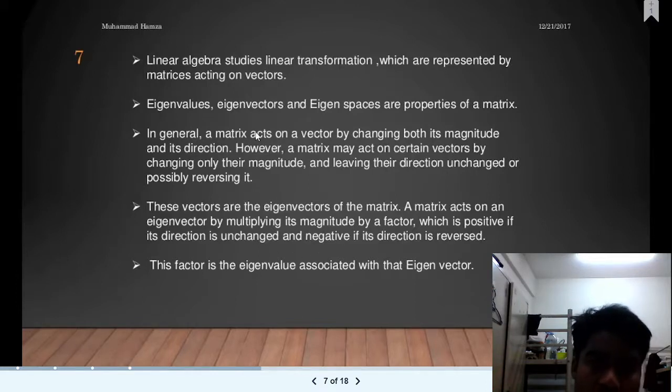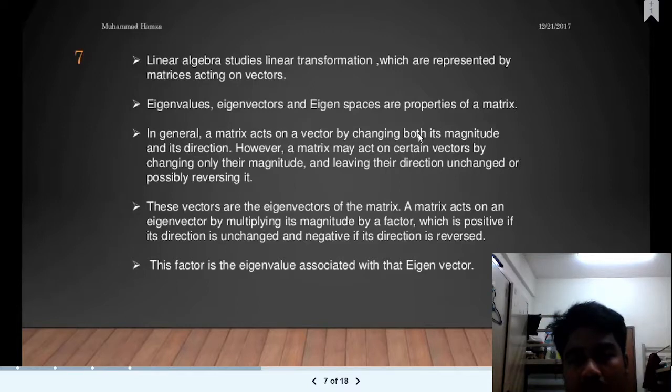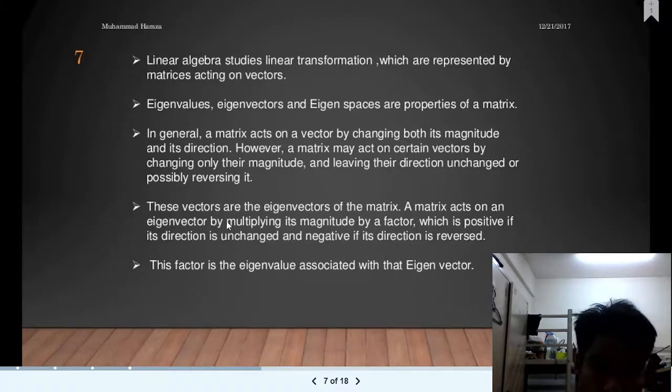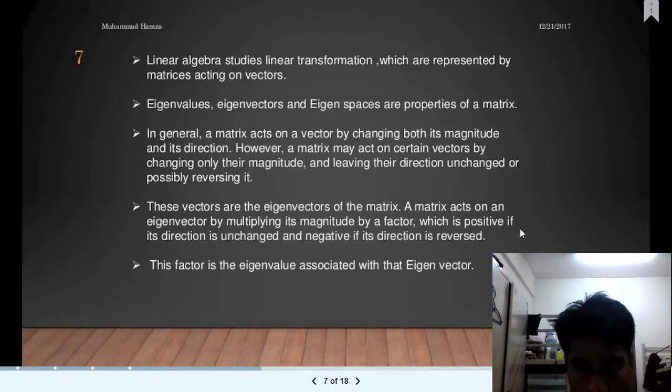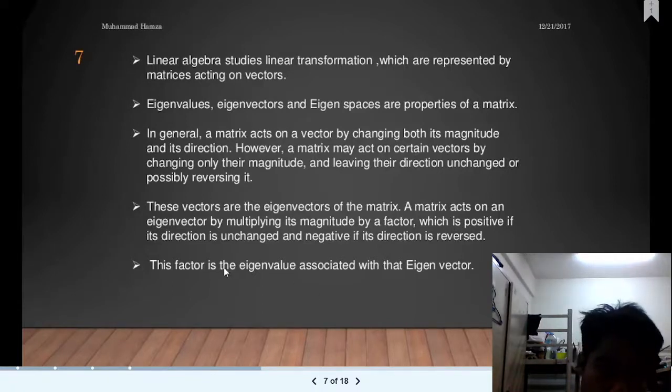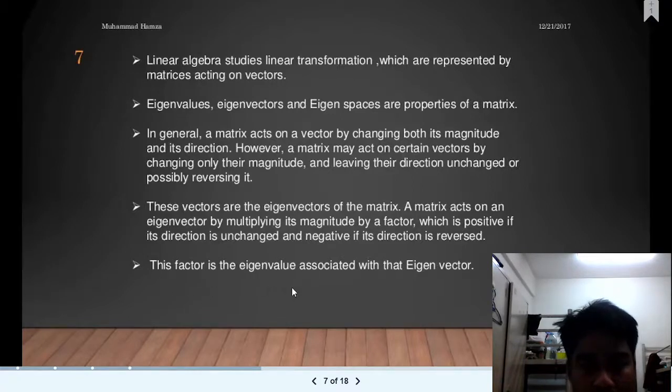In general, a matrix acts on a vector by changing both its magnitude and direction. However, a matrix may act on certain vectors by changing only the magnitude and leaving the direction unchanged or possibly reversed. These vectors are eigenvectors of a matrix. A matrix acts on the eigenvector by multiplying its magnitude by a factor. The eigenvector direction is unchanged if positive and negative if the direction is reversed. The eigenvalue is a value associated with that eigenvector.